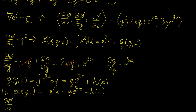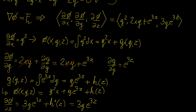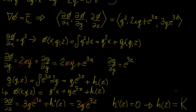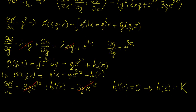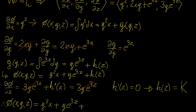Now we differentiate phi with respect to z. The term xy² vanishes, ye^(3z) becomes 3ye^(3z), and h(z) becomes h'(z). Setting this equal to the third component 3ye^(3z), the 3ye^(3z) terms cancel, leaving h'(z) = 0. This means h(z) is just a numerical constant k. Therefore our final potential function is phi(x,y,z) = xy² + ye^(3z) + k.